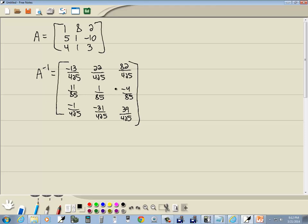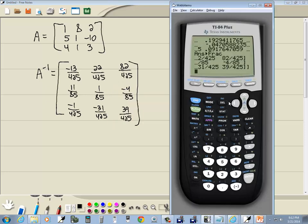And that's our inverse. Now, if we were to multiply that times A, we should get our identity matrix. So if I did times, and then go second x of negative 1, enter on A, and enter again.